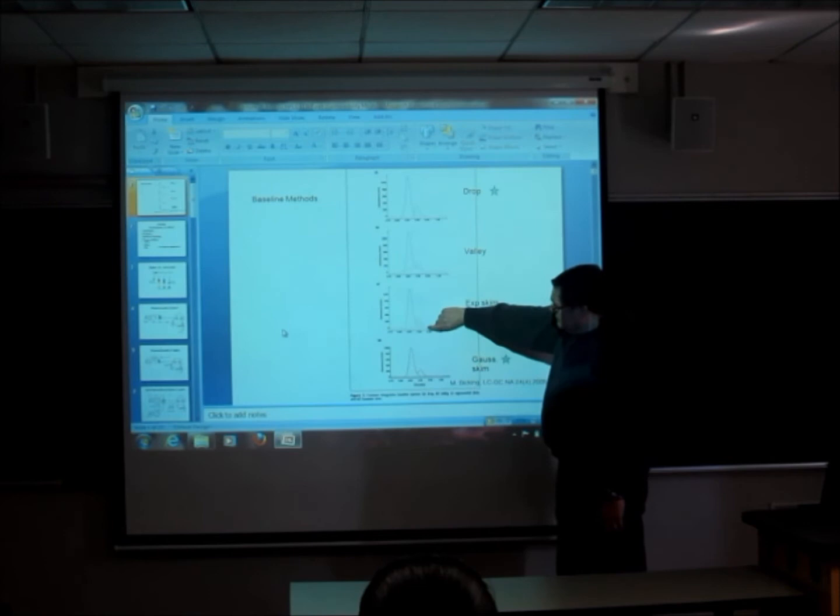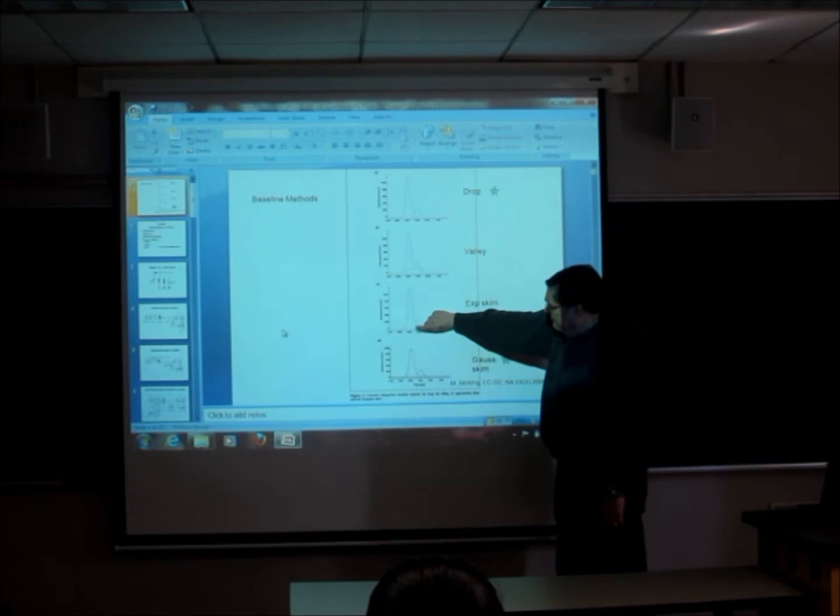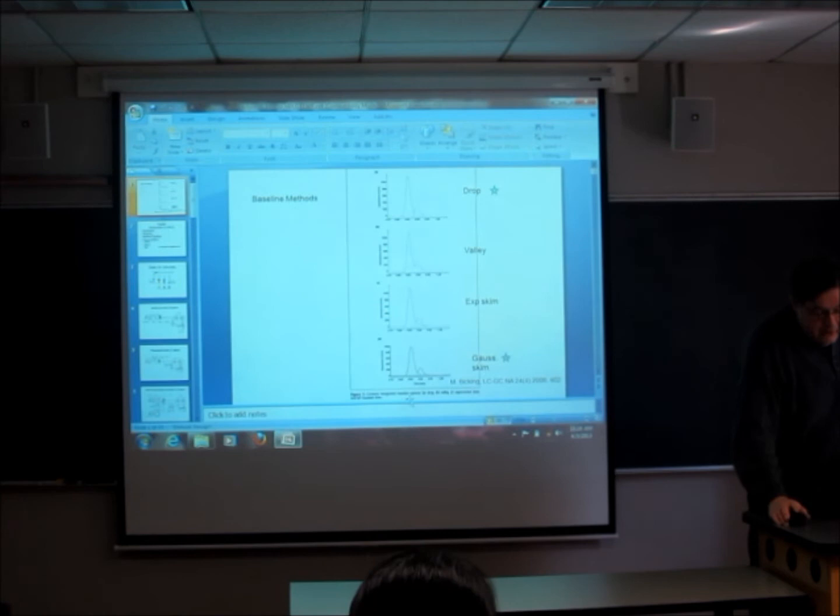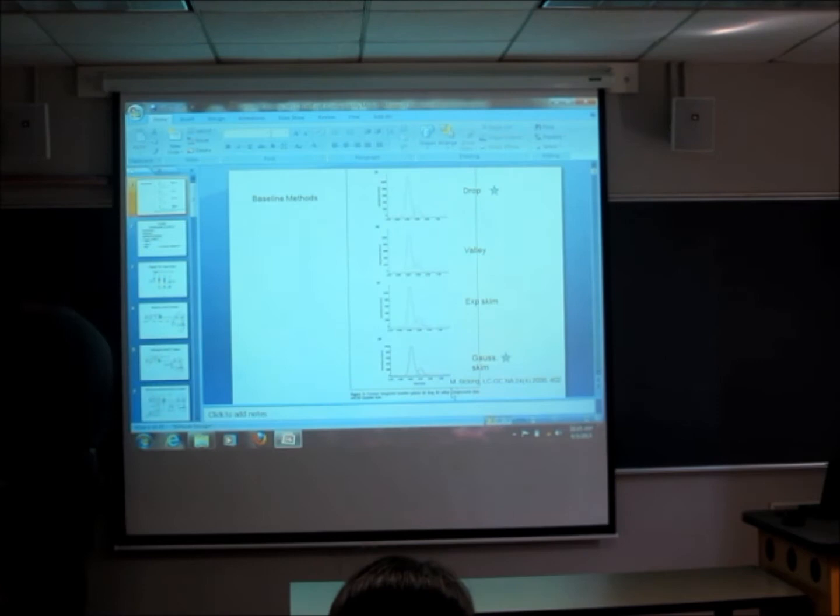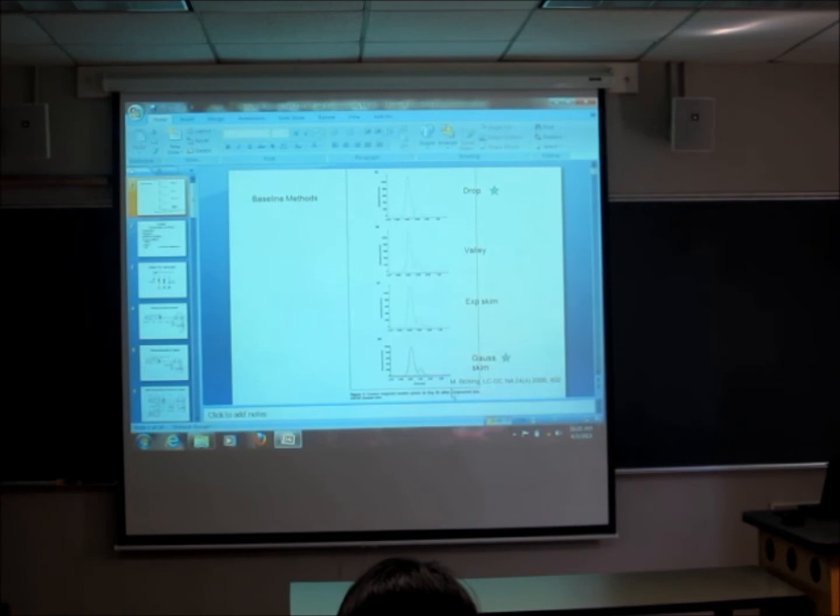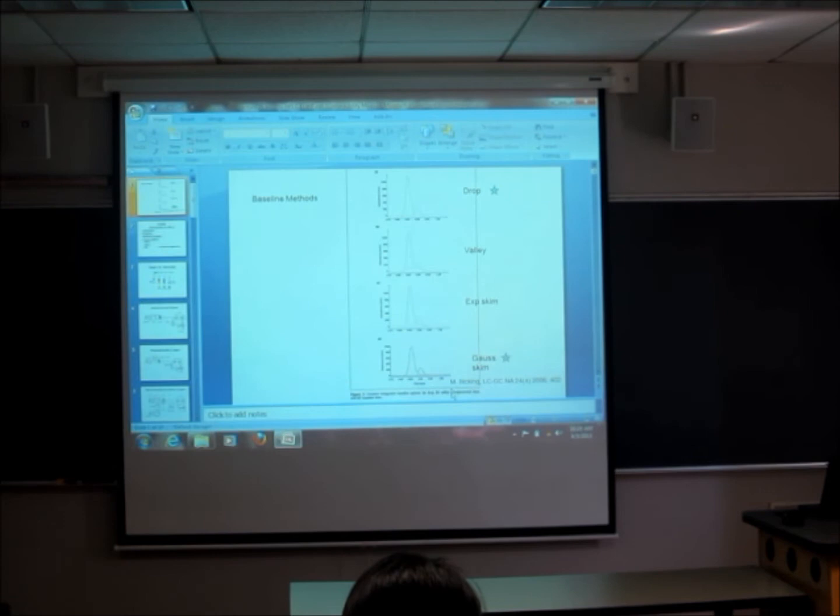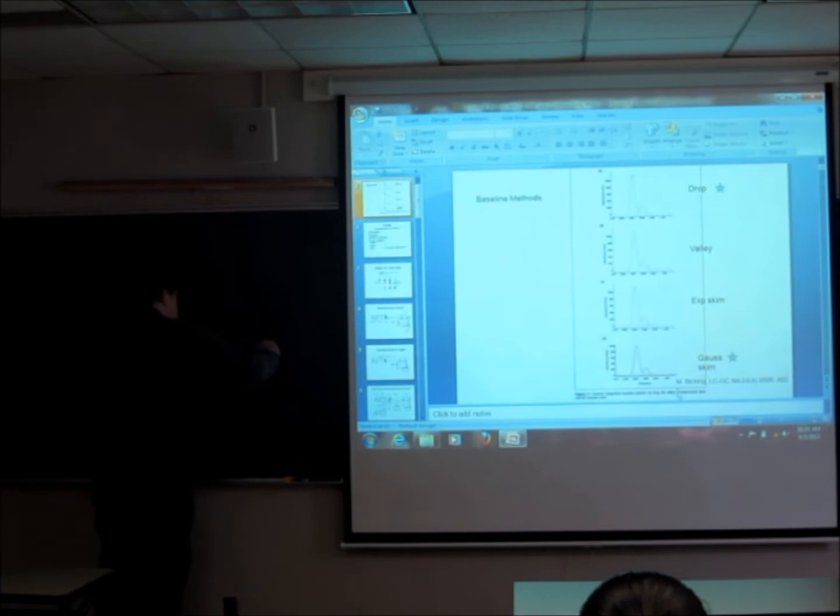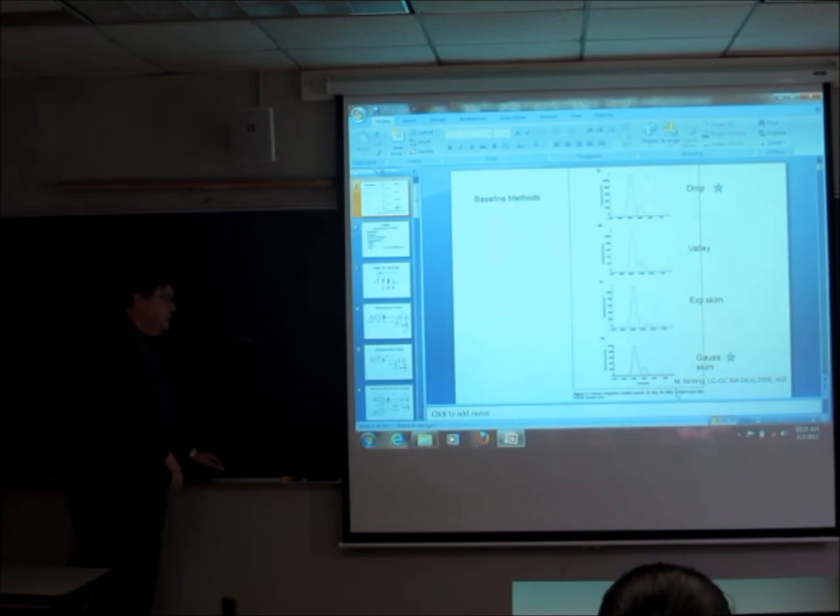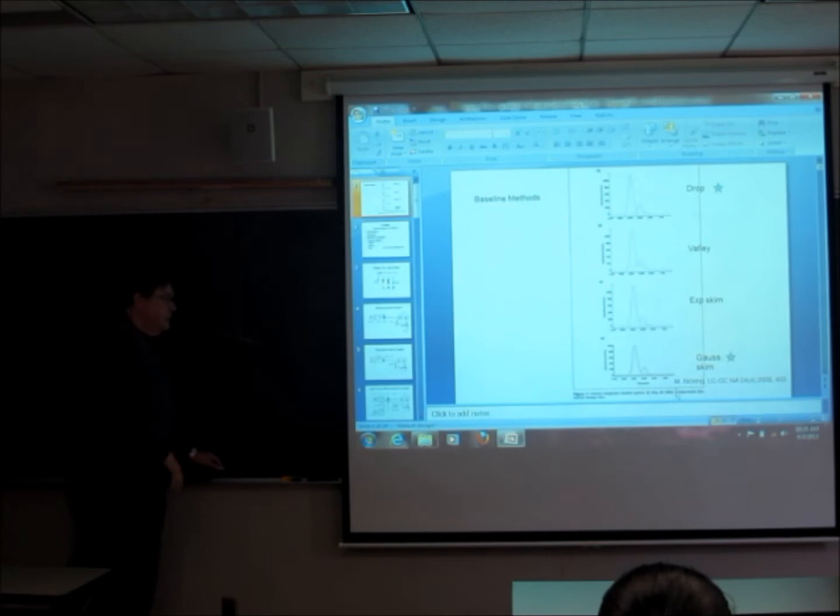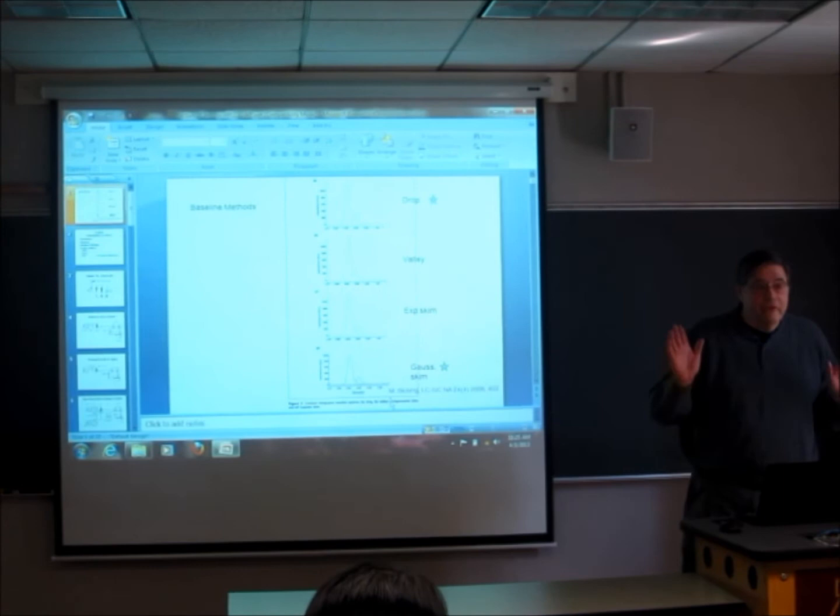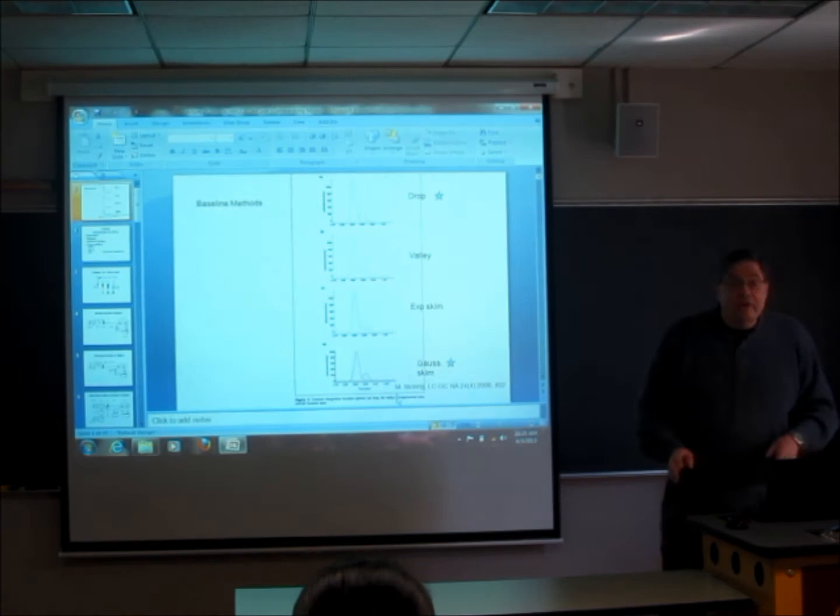Two methods that have more error involved: the valley technique, where you take a straight line from the foot to the valley and then from the valley down to the foot of the second one. This has the effect of underestimating both areas. And the exponential skim, where you assume this is an exponential decay. When you're dealing with nice Gaussian peaks, this is not a particularly good approach. The computer does this automatically, nobody does this by hand. It's in the software.